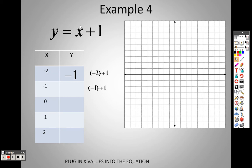Then I take negative 1 and plug it in. Negative 1 plus 1 is 0. Then I take a 0 and I plug it in. 0 plus 1, which is 1. Then I take a 1 and plug it in. 1 plus 1, which is 2. Then I take a 2 and plug it in. 2 plus 1, which is 3.